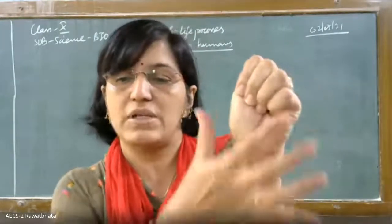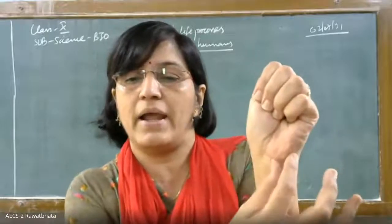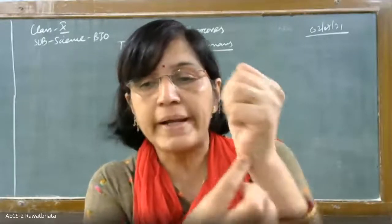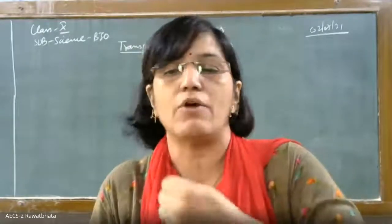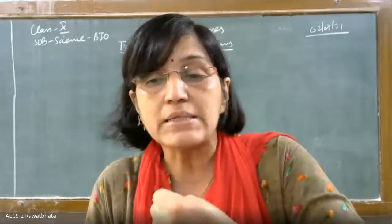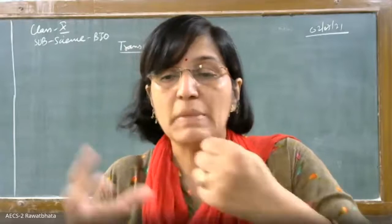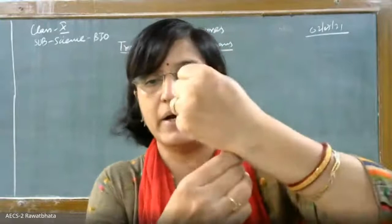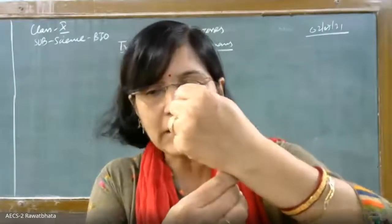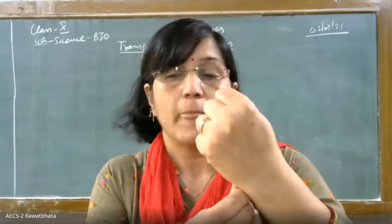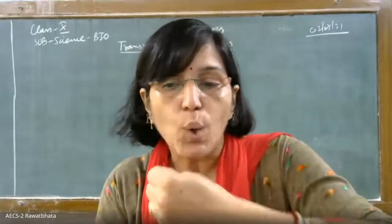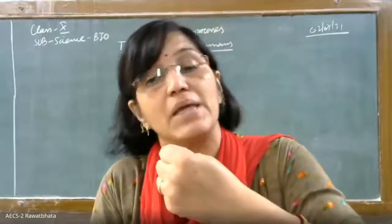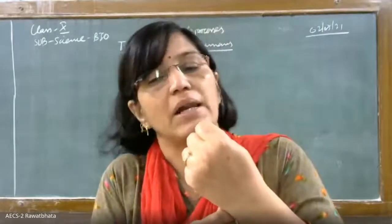If you look at the structure of this fist, it has a triangular pointed end — we call it the apex. The heart's pointed end is exactly in the center of the chest cavity, in between the ribs. The heart is tilted a little bit towards the left — but I repeat, the heart is not located on the left side.